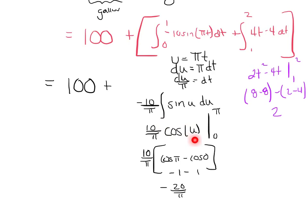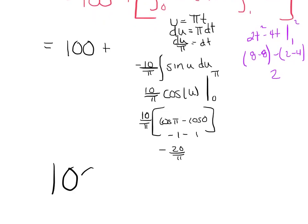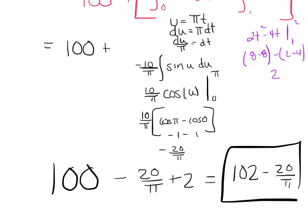The derivative of positive cosine would be negative sine. My negatives cancel, and I've got 10 over pi cosine of u. I changed the bounds this time just to show you you can leave the u and change the bounds or substitute the original in. I've got 10 over pi cosine of pi minus cos of 0, which gives me negative 20 over pi. Then I did this side, which was nothing fancy, and I just integrated and got 2. For my final answer, I've got 100 minus 20 over pi plus 2, so that's 102 minus 20 over pi gallons.